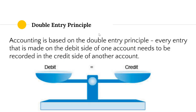Accounting is based on the double entry principle. Every entry made on the debit side of one account needs to be recorded on the credit side of another account. So if I have 10 rand on the debit side, I need 10 rand on the credit side so that they balance. Every transaction needs to balance — all amounts on the debit side must add up to all amounts on the credit side. Accounting is worked on balancing.